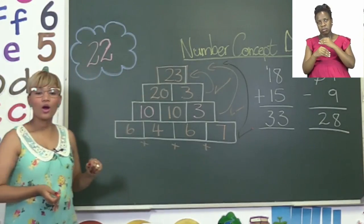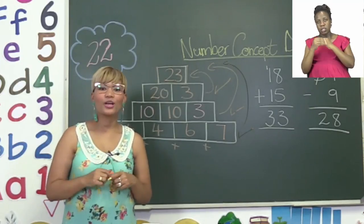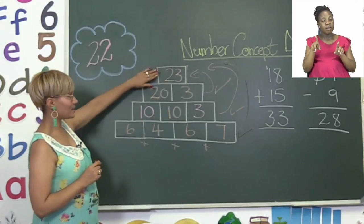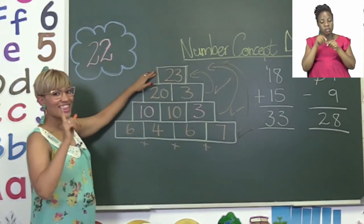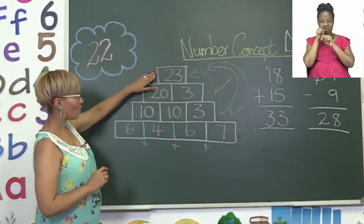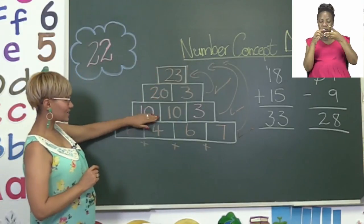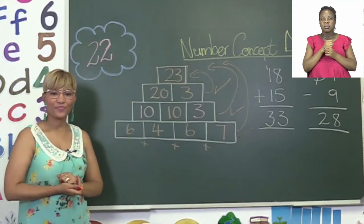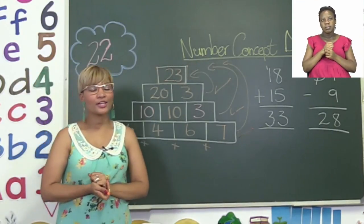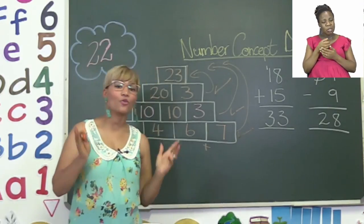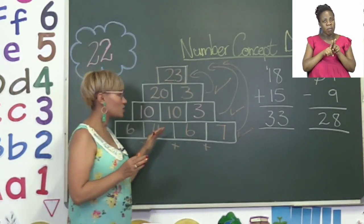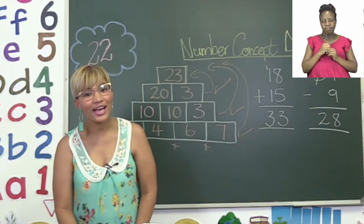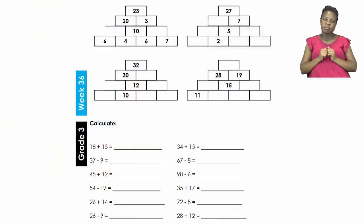Now everyone all the other blocks you have to go ahead and do exactly the same way. Now remember the number on top, that is the answer or that is the number that all these other numbers must equal to. Now I need you to go ahead and try to do all of these others or complete all these other blocks on your own. But before you do that, let's quickly have a look at the next part of the activity.